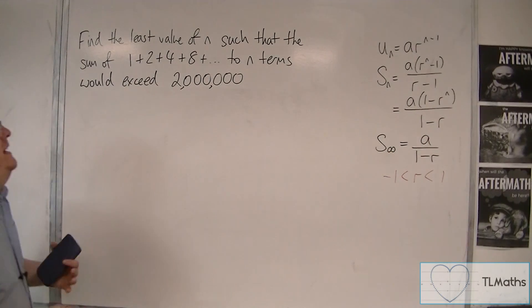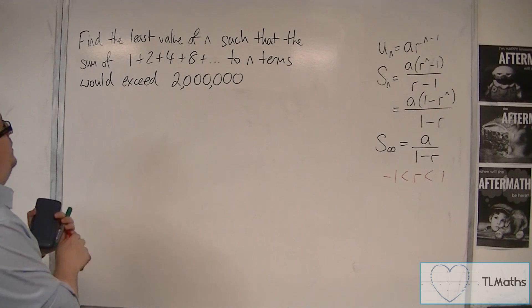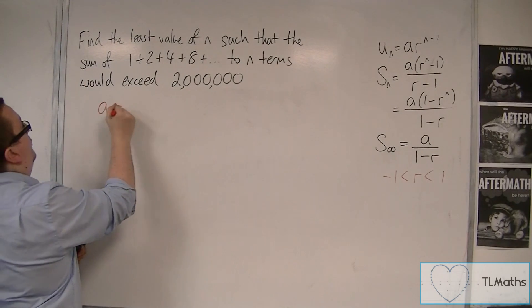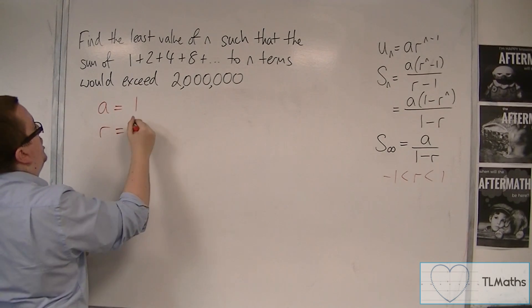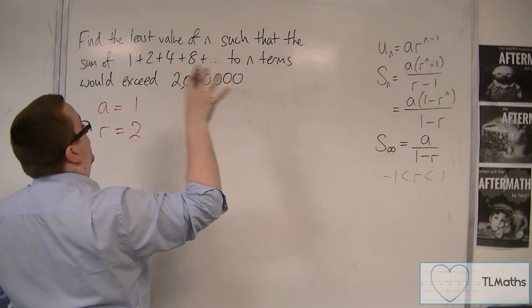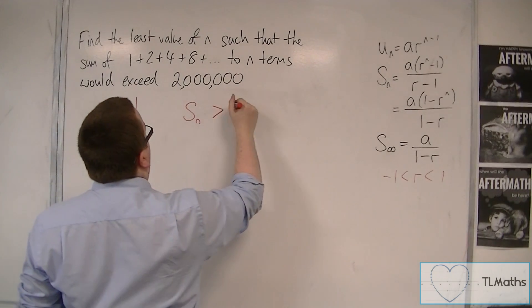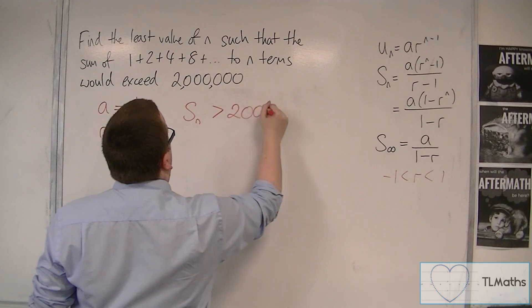So how many terms would I need to add together effectively to first exceed 2 million? We can identify that a is 1 and the common ratio is 2, so we can see that automatically. So that means our sum to n must exceed, so the first n that would exceed 2 million.